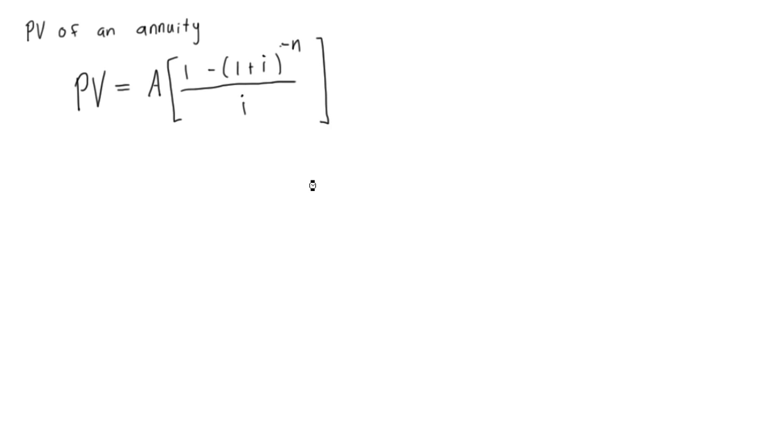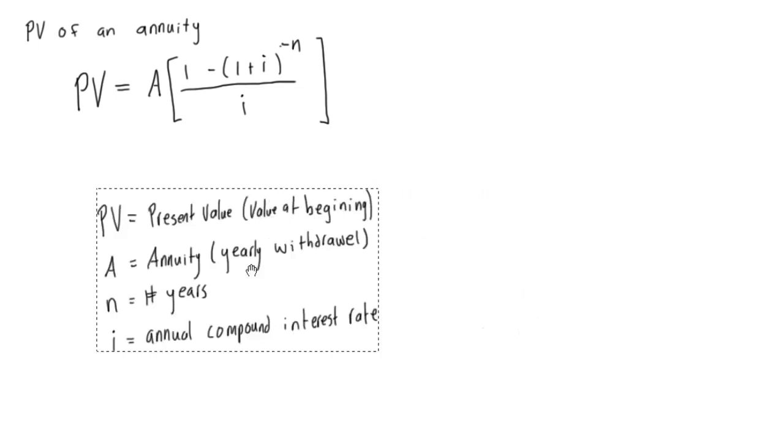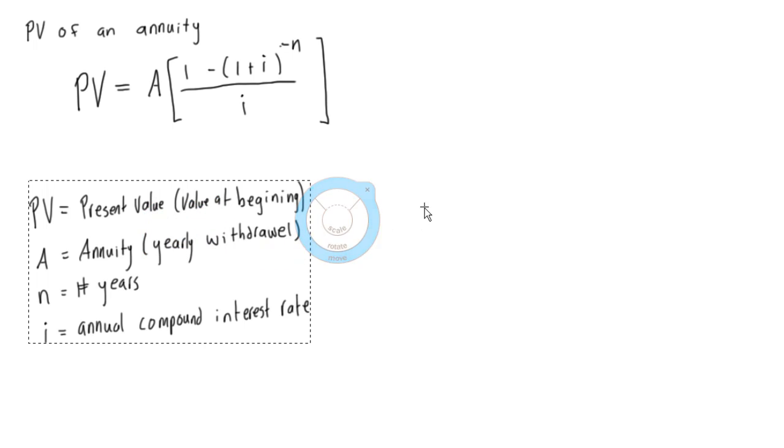Okay, and just for your reference, I've written them down here so you don't have to watch me write them out. Present value is the value at the beginning of the period. Annuity is how much you're withdrawing. i is the annual compound interest rate and n is the number of years.